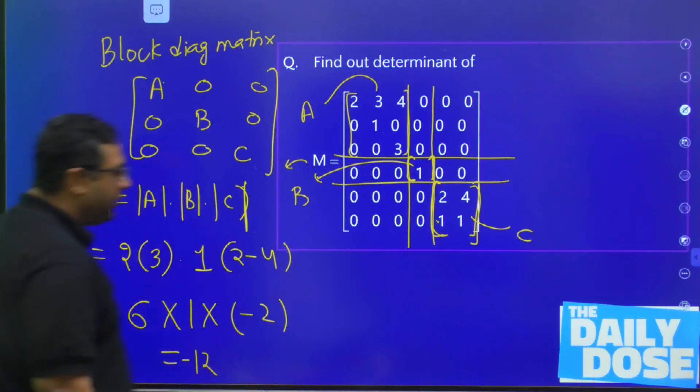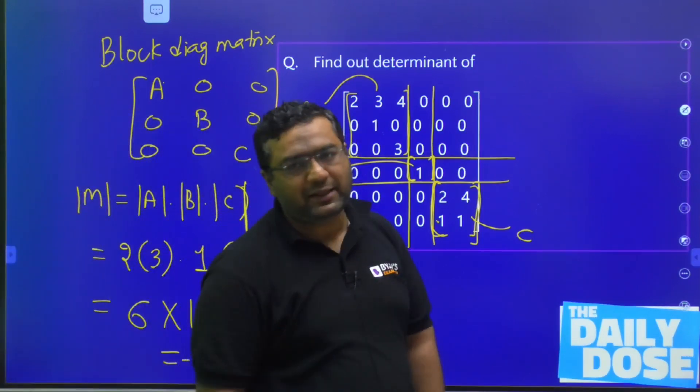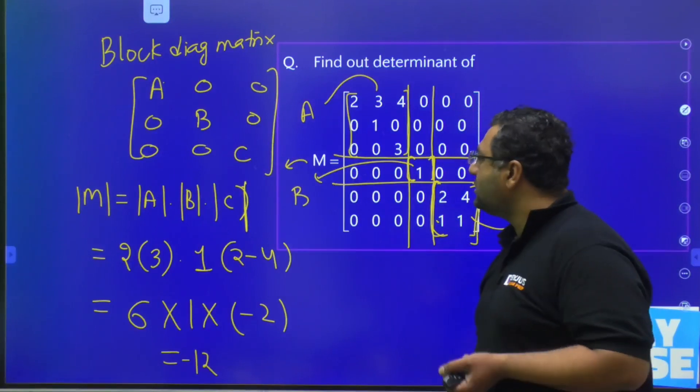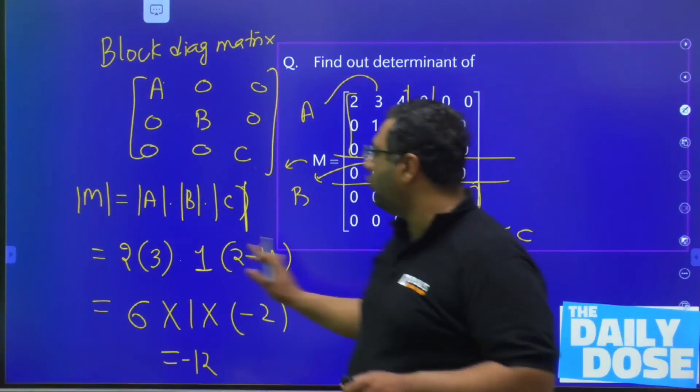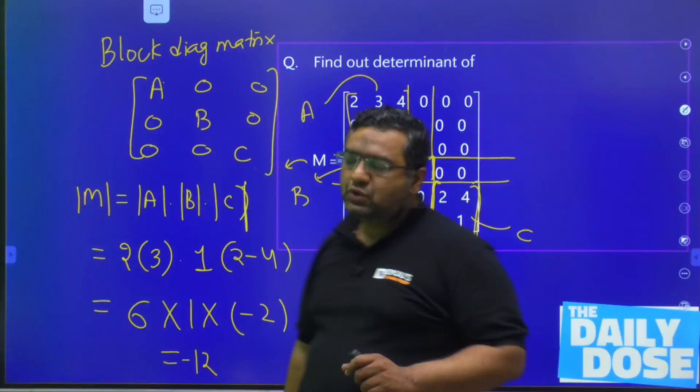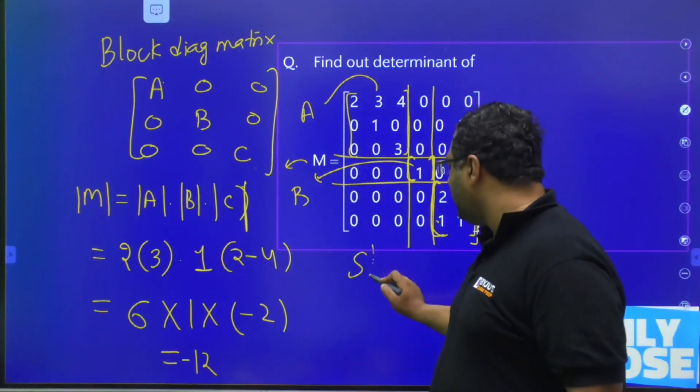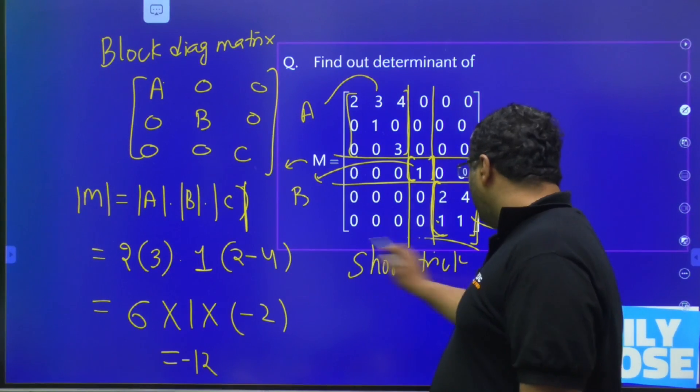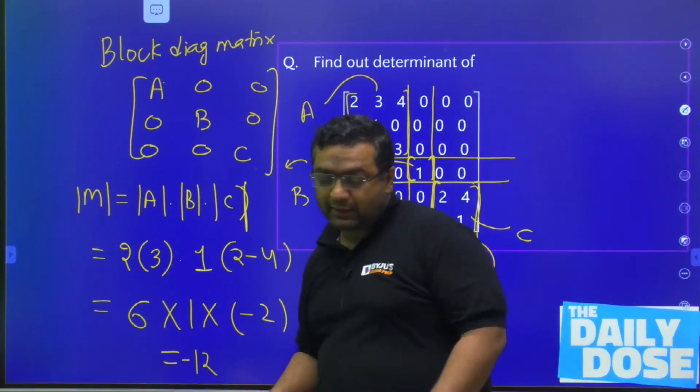So guys, the determinant of this matrix is going to be minus 12. This is how you can apply the trick—you just need to put the matrix in the format of these three blocks. If you like this trick, just like the session, and if you want more such tricks, you can write in the comment section.